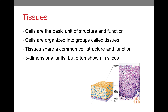When we look at tissues, they're three-dimensional units, so they have length, width, and height or depth, but they are often shown in slices. So if we look at this example of stratified squamous epithelial tissue, you'll see in diagram A on the left, it is a three-dimensional structure. However, when you look at the microscope picture on the right in figure B, you'll see that it is just a slice of that.